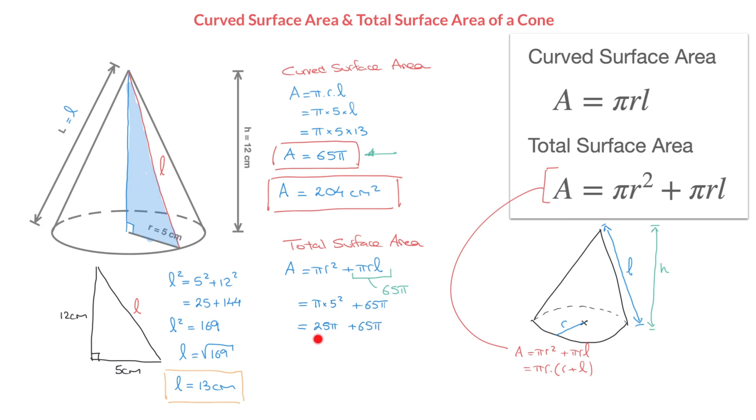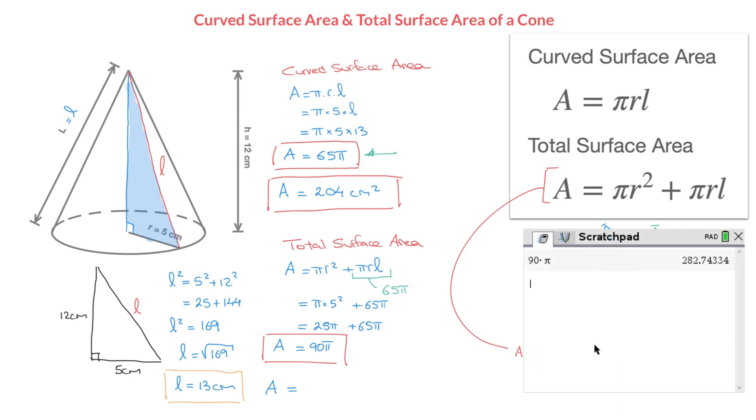And now gathering these two multiples of pi, we have 25 plus 65, which is 90. So that's 90 pi. And if we didn't have a calculator, we could stop there. The total surface area of the cone is equal to 90 pi square centimeters. And of course, if we do have access to a calculator, then all we do at this stage is plug 90 times pi into our calculators and calculate. And in doing so and rounding to three significant figures, I find that this cone's total surface area is equal to 283 square centimeters. And there we go.